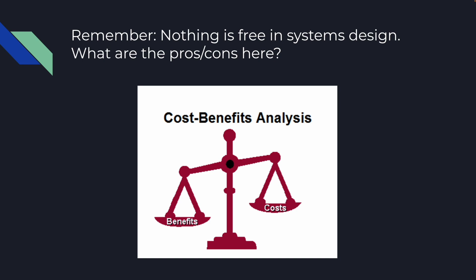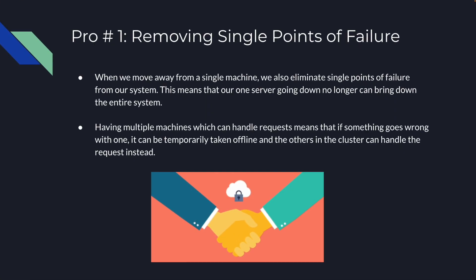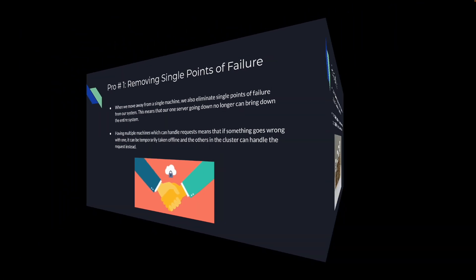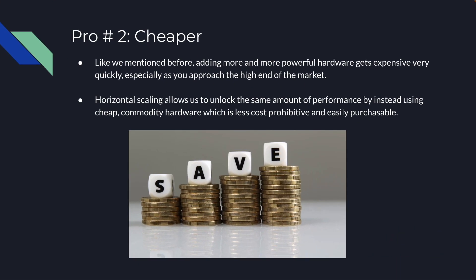Pro number one: we're able to remove single points of failure. When we move away from a single machine, we also eliminate single points of failure from our system. This means that one server going down can no longer bring down the entire system. Having multiple machines which can handle requests means if something goes wrong with one, it can be temporarily taken offline and the others in the cluster can handle the requests instead.